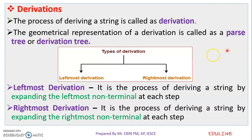This derivation has a geometrical representation — we need to create a pictorial representation. We need to call it a parse tree or derivation tree. We need to represent the derivation in a tree structure. We need to call it a parse tree or derivation tree.